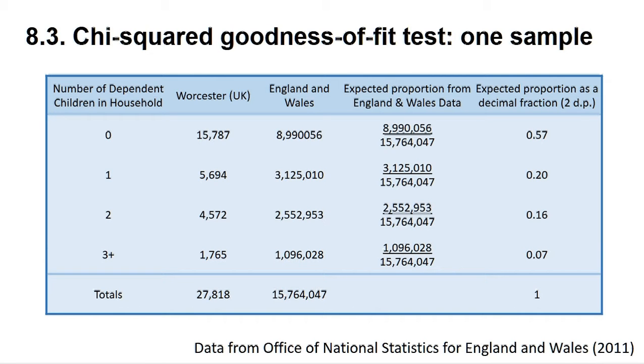We can now use the proportions given in column 5 to allow the programme to calculate expected values so we can test the hypothesis that there is no difference between the distribution of dependent children in households in Worcester compared to the expected distribution found in England and Wales.